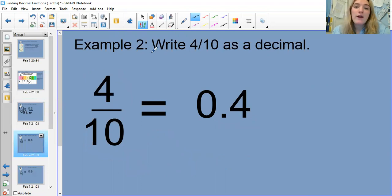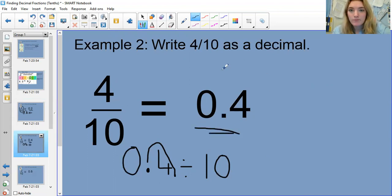Example number two, if we were to write four tenths as a decimal, we do ten divided by four. If we've got our little imaginary decimal point here, we are moving it back one space because we're dividing by ten, and zero has to go here because it's our placeholder. So four over ten is equal to zero point four because we're dividing our four by our ten.